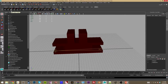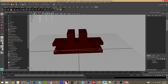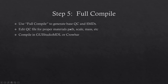Hit Control+Save. The reason you do this is because sometimes if you're working on something and then move on to compiling, it may crash on you. So on step five, we go to full compile, which will generate the QC files and SMDs. Then we're going to edit the QC file and compile it in our program of choice.